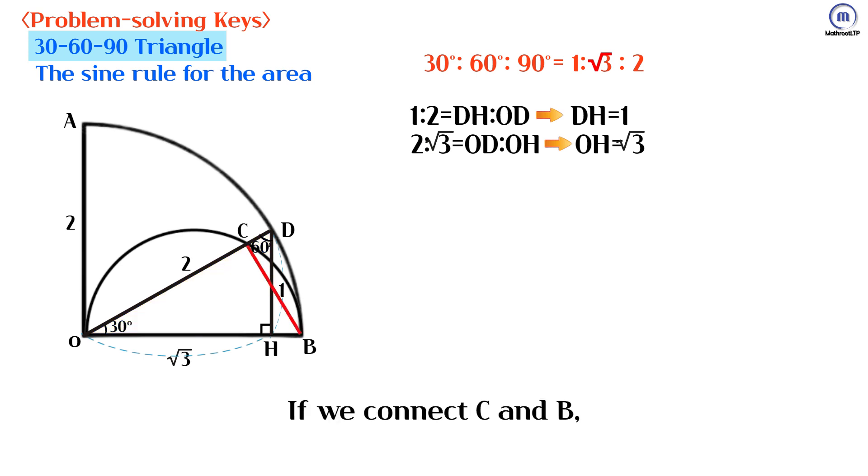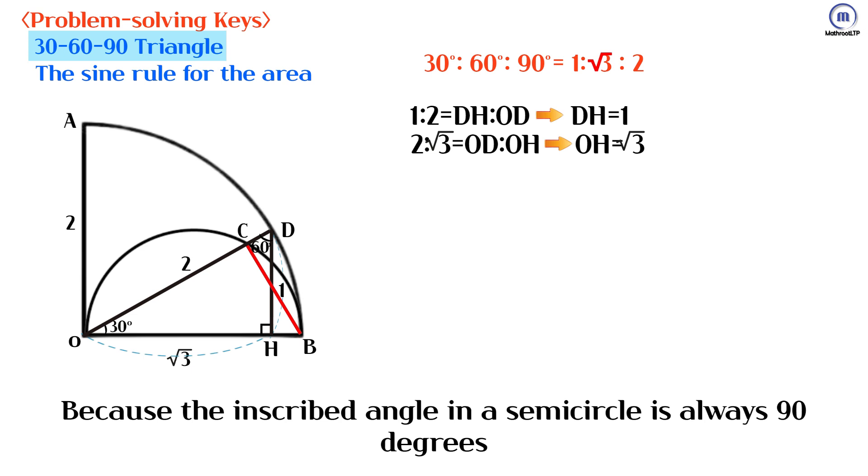If we connect C and B, angle OCB is 90 degrees, because the inscribed angle in a semicircle is always 90 degrees.